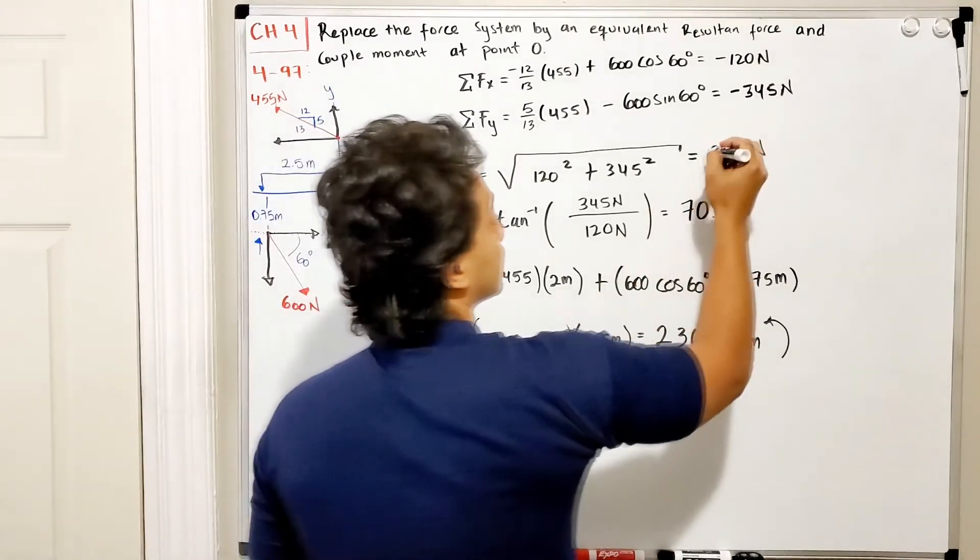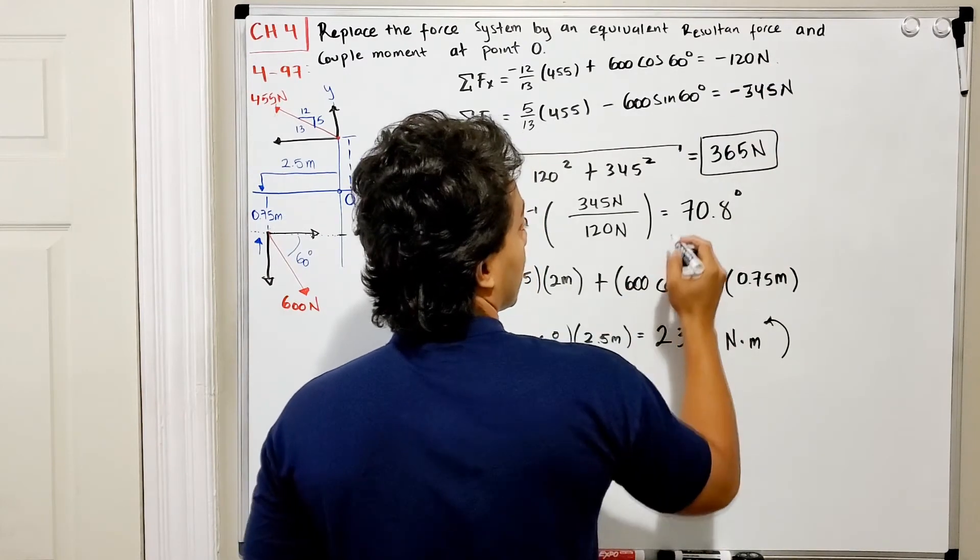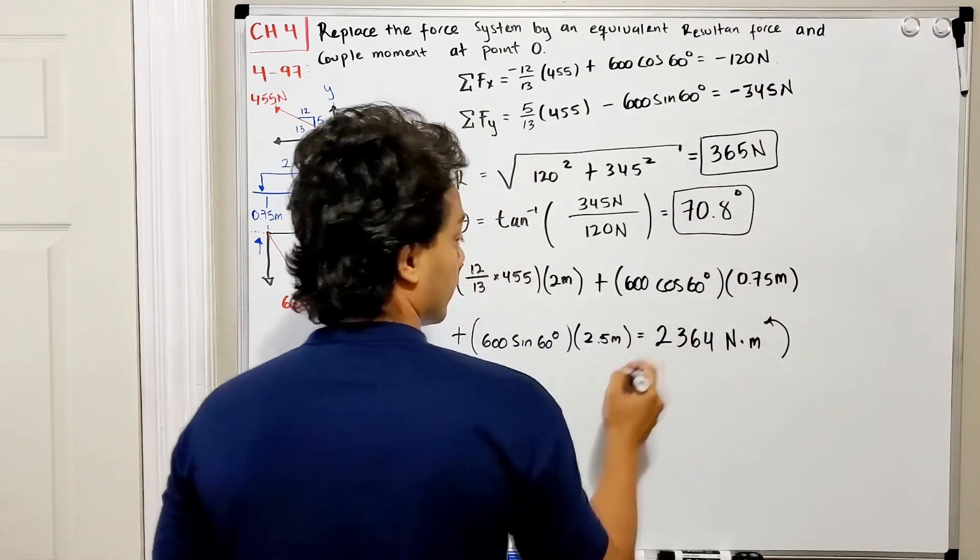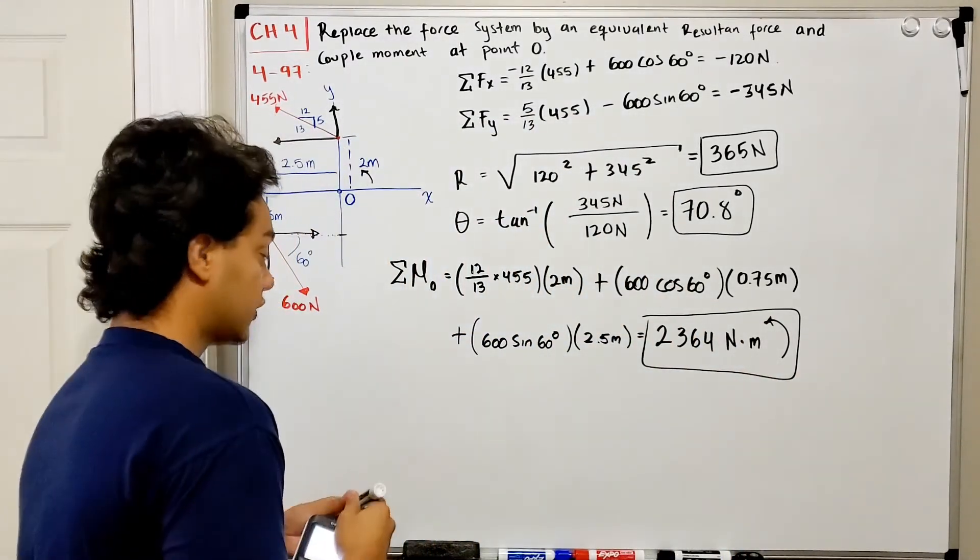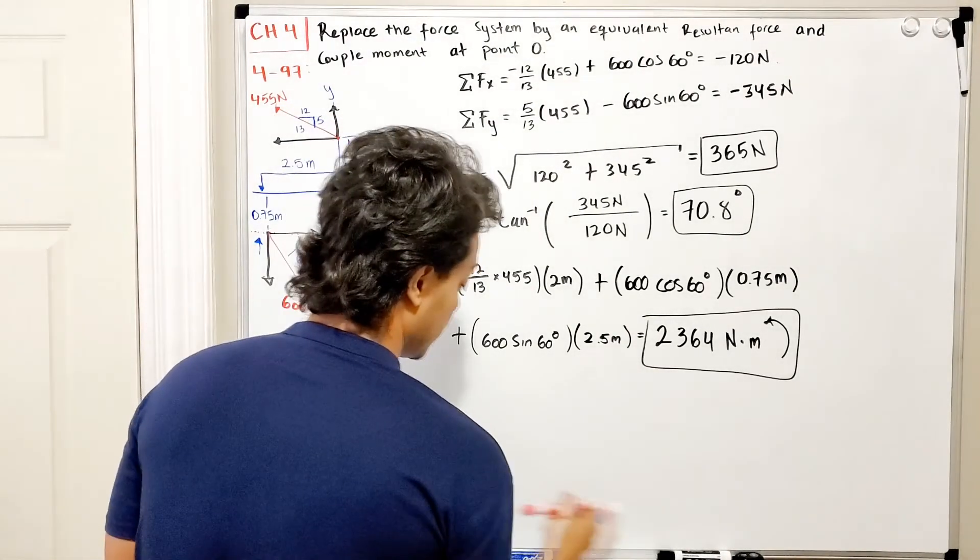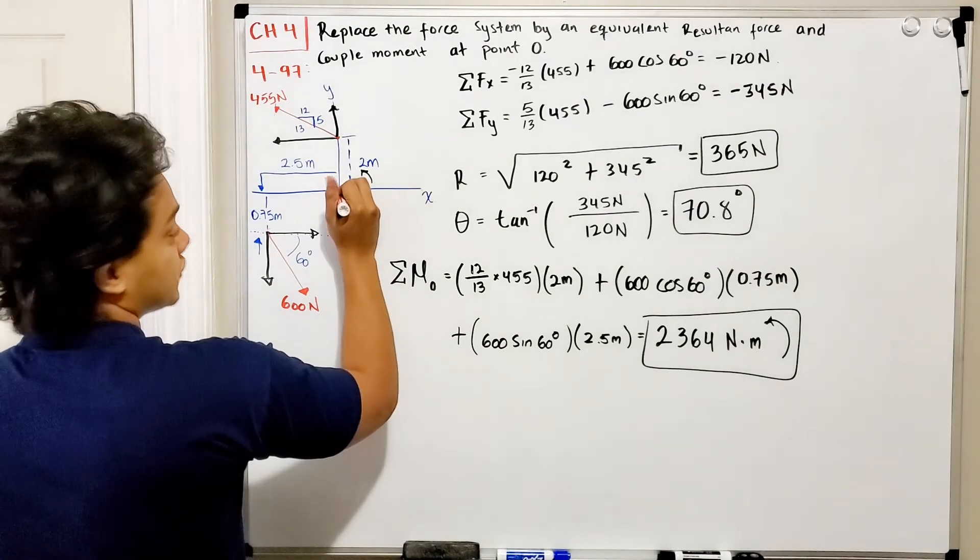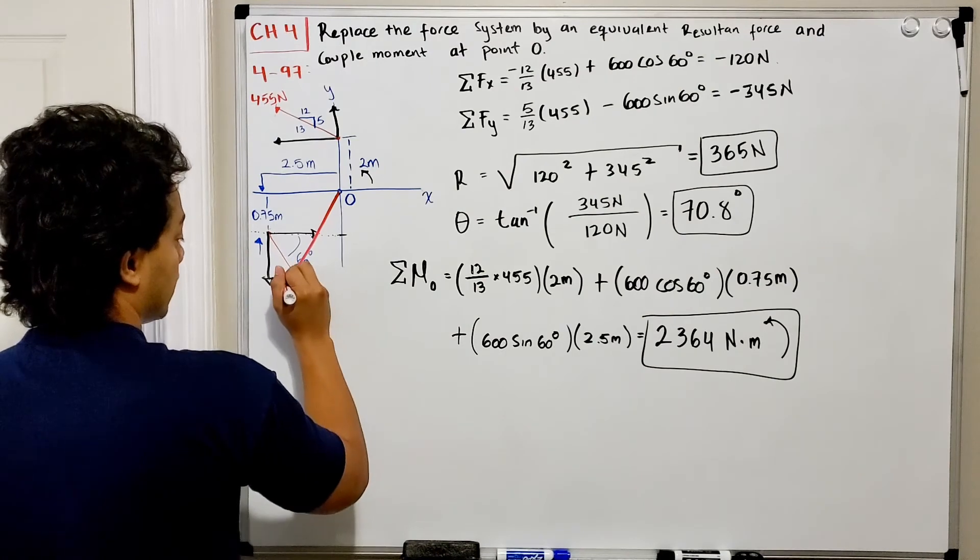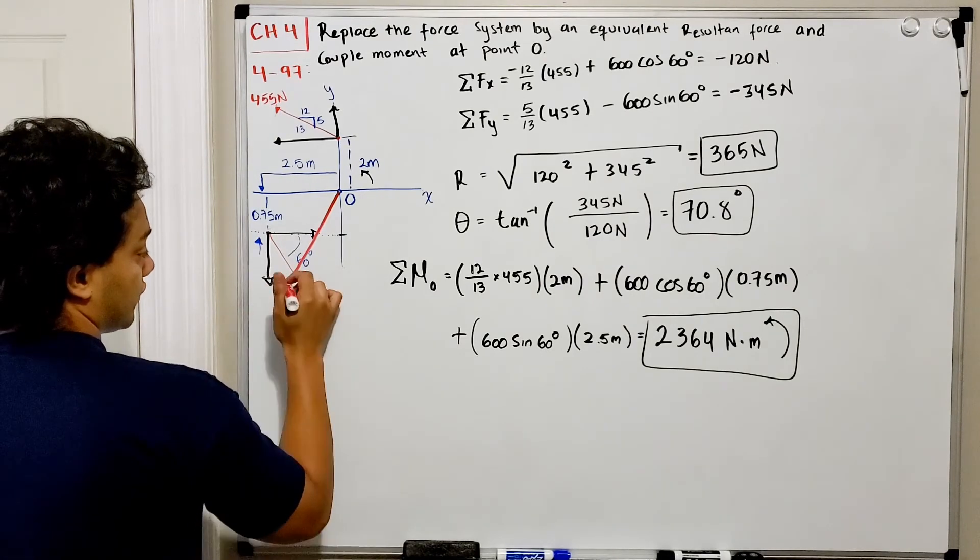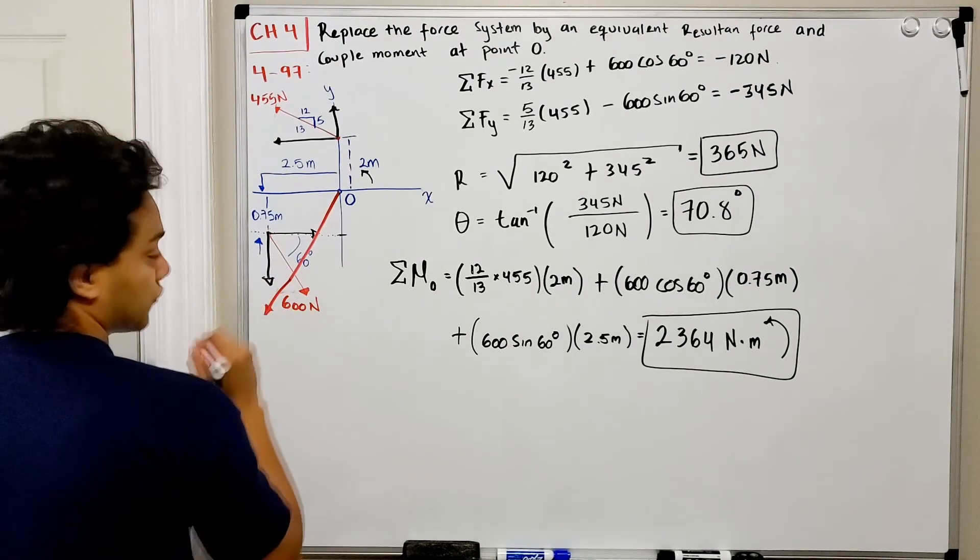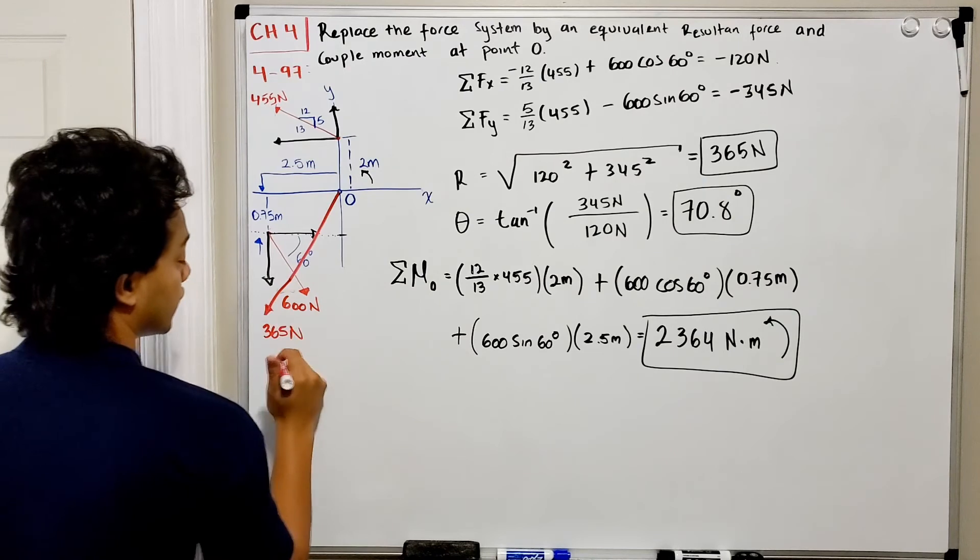We found our resultant force magnitude and its x and y components, and its direction angle. We also found the moment around point O. If I were to draw the force, it goes like this in this direction, even bigger than that. It will be 365 newtons.